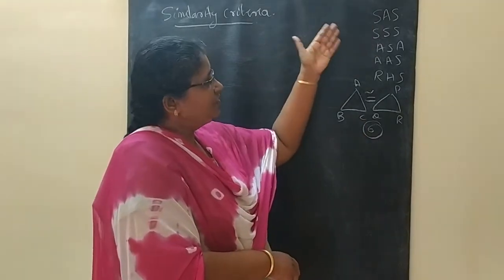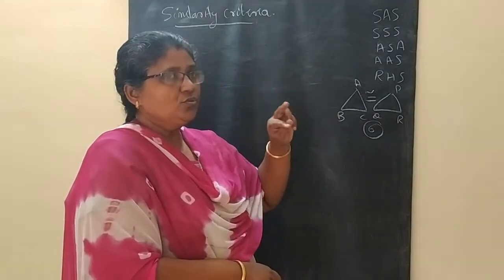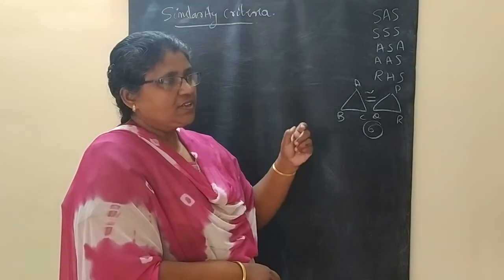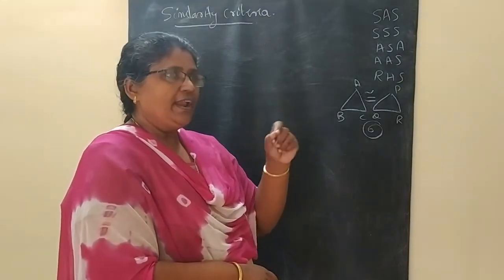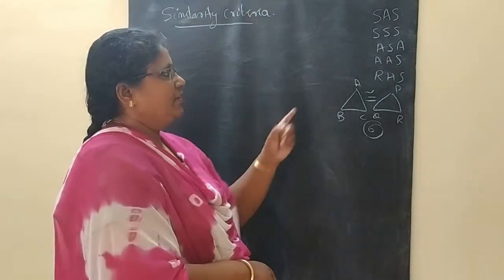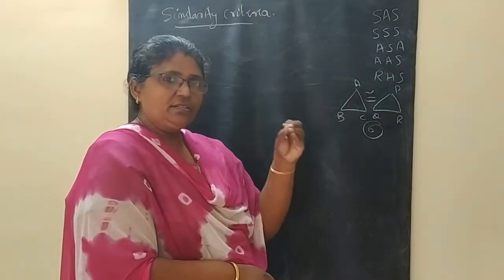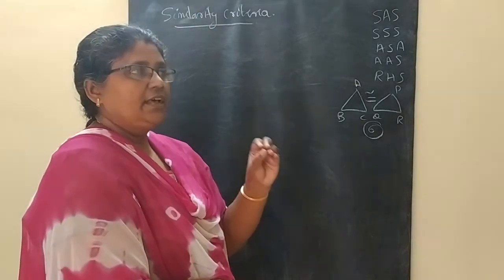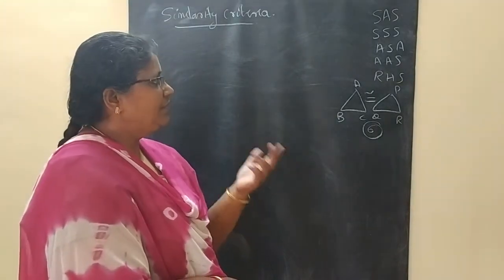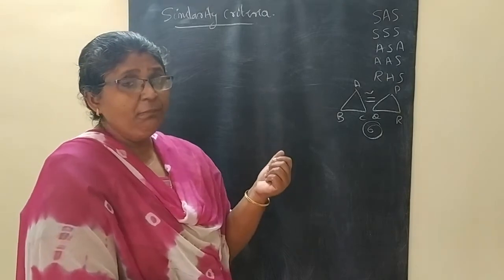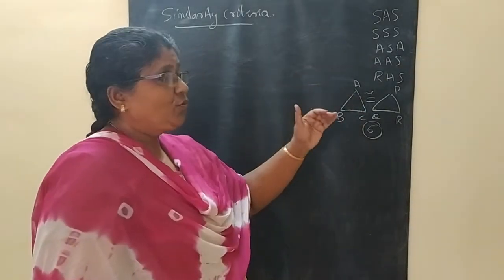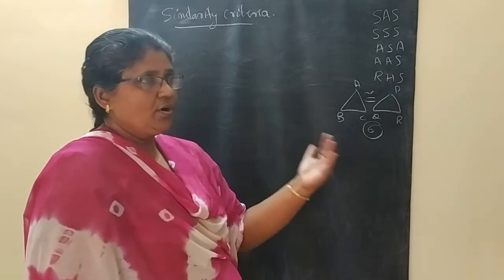What is SAS? If two sides and the included angle are equal, then the triangles are said to be congruent. SSS means if all three sides are equal, then automatically the angles are also equal and the triangles are said to be congruent. These are the axioms you studied for proving two triangles congruent.